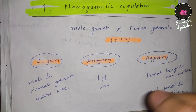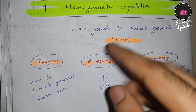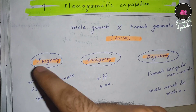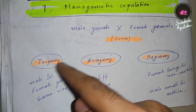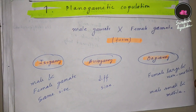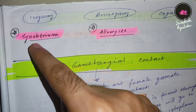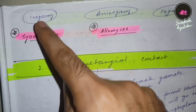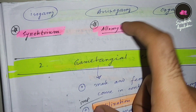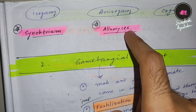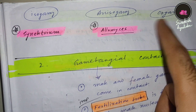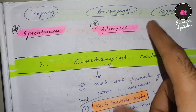From an exam perspective, concepts alone are not enough. We have to remember the examples of fungi showing each type. Synchytrium shows isogamy planogametic copulation, and Allomyces shows anisogamy planogametic copulation. You can also search for an example of oogamy planogametic copulation, as a clear example was not found.